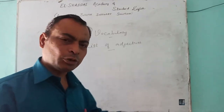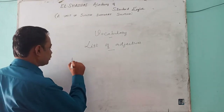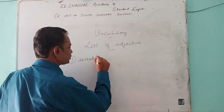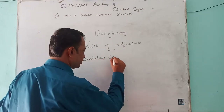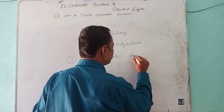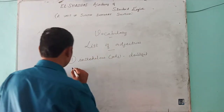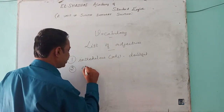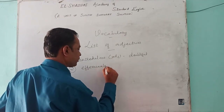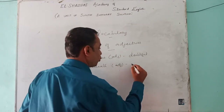First of all, we go for adjectives — five of them. The first one is incredulous — an adjective which means doubtful. The second one is effeminate — an adjective which means unmanish.